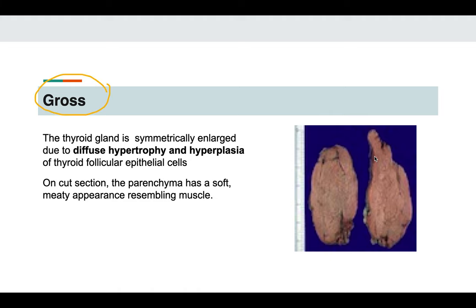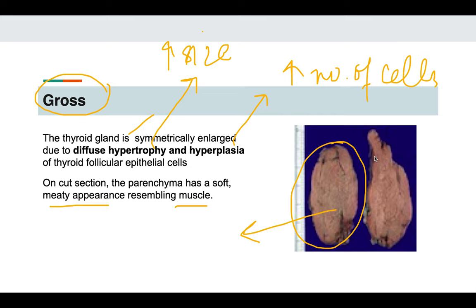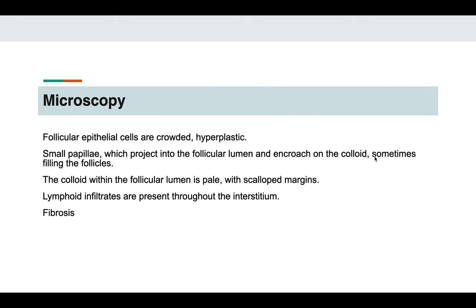On gross examination in Graves' disease, there is symmetrical diffuse enlargement of the thyroid gland due to diffuse hypertrophy and hyperplasia of the thyroid follicular epithelial cells. Hypertrophy means increase in cell size and hyperplasia means increase in cell number. On cut section, the thyroid gland has a very meaty appearance resembling muscle.